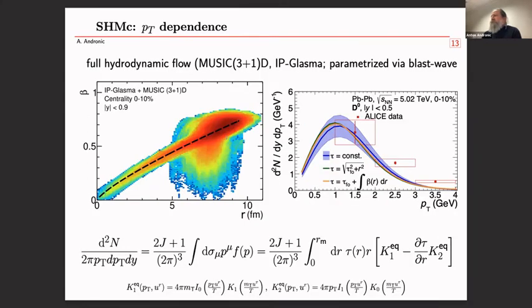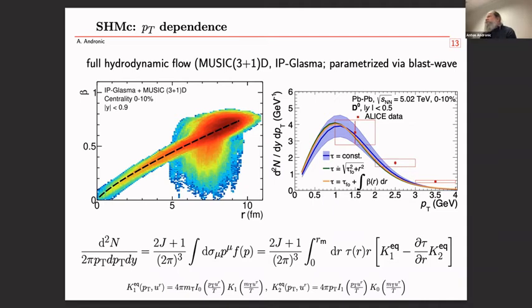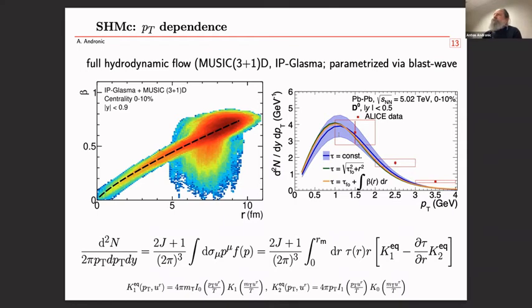The transverse momentum dependence is computed assuming full hydrodynamical flow up to 156 MeV, using inputs from hydro calculations with MUSIC and IP-Glasma initial conditions. We parameterize the spectrum using Bessel functions with a beta dependence on the fireball radius. We looked at three freeze-out surface scenarios — the dependence is rather small — so the uncertainty band is almost entirely dominated by the charm cross section uncertainty, which is by far the leading source.